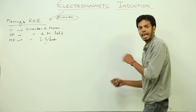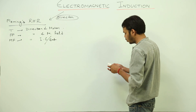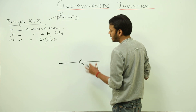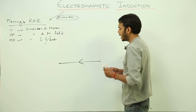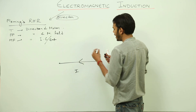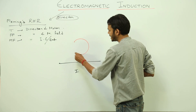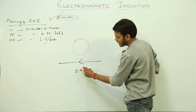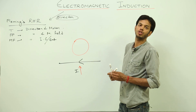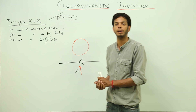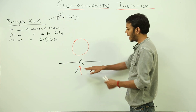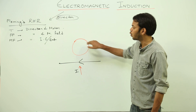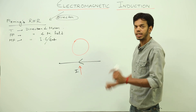Now let's do a tricky question. We have done a few easy examples, so now let's do a very tricky one. I have a wire with current already flowing in this direction — this is the direction of current flow — and I have a circular loop placed here. I want to know what will be the direction of induced current in this loop when this current I starts increasing.